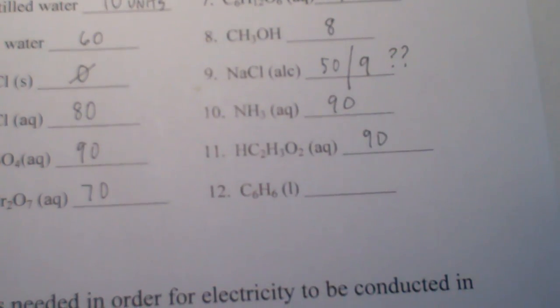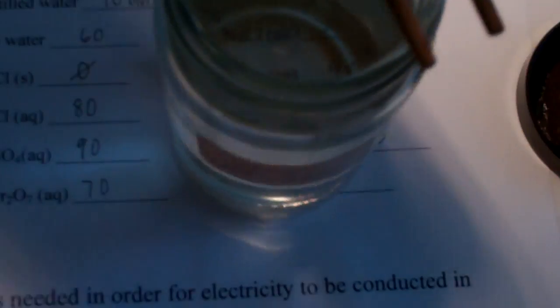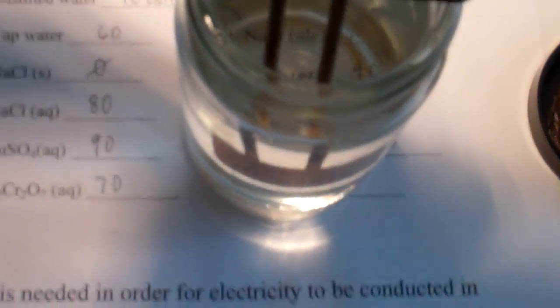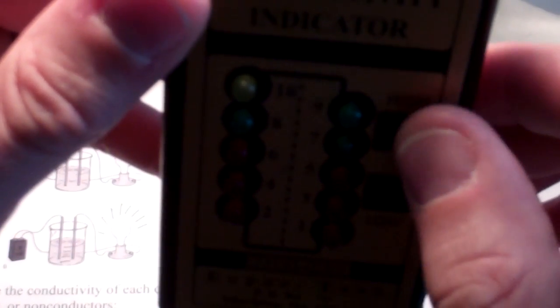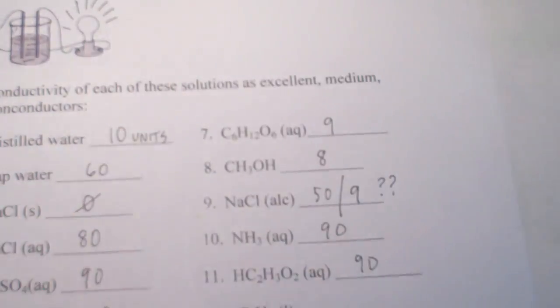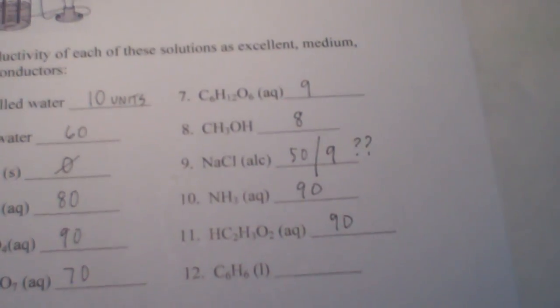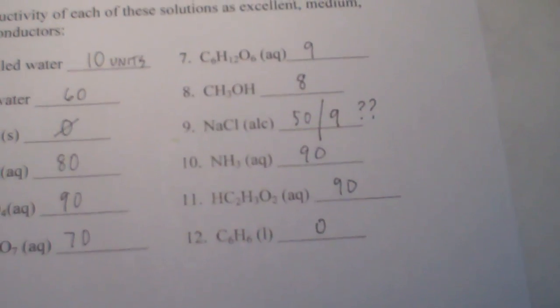And then our last substance will be cyclohexane. So, the stuff is quite aromatic here. Well, smells. And we will try the low setting first. Nothing. Just to verify the high setting. Nothing. So, this has a conductivity of absolutely zero. So, cyclohexane has no conductivity at all. Okay. Zero.